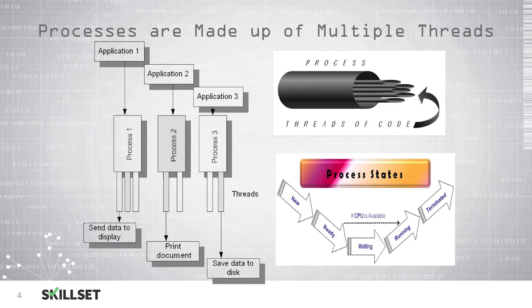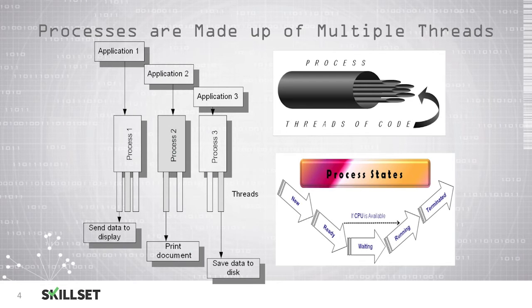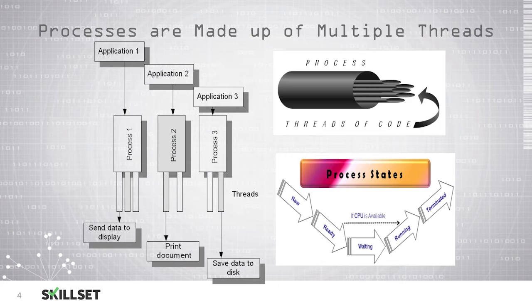Computers can have several different applications running at one time, which means that many processes could be running at once. Processes are made up of threads of computer code and each process can handle something different. In this example we can see that there are three processes or applications running. The first process has three threads, one of which is sending data to the computer's monitor. The second process has two threads, one of which is printing a document, and the third application has two threads, one of which is saving data to the disk.